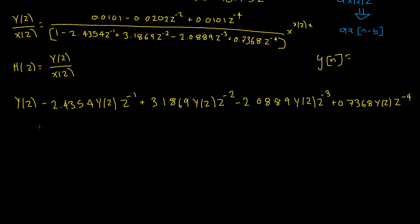And then all of that is equal to our denominator on this side will now cancel and we'll be left with our numerator multiplied by X of Z.